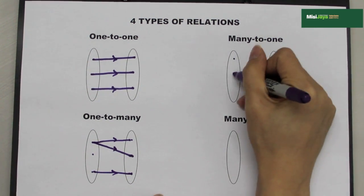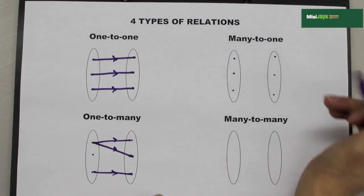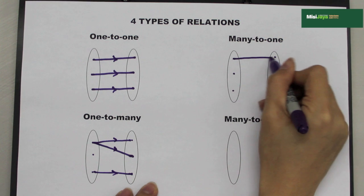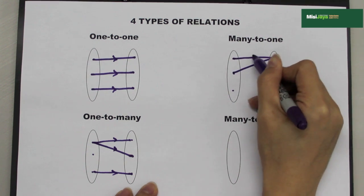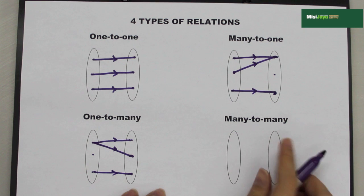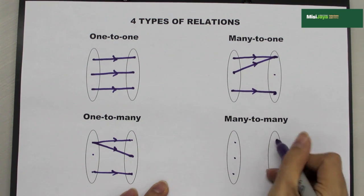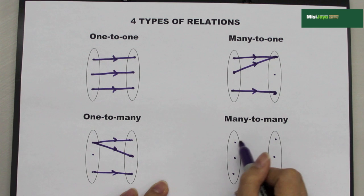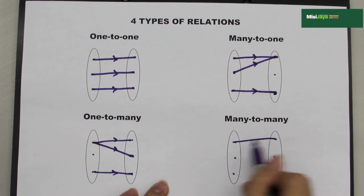Many to 1, which means that 2 objects have the same image. Many to many, which means that 1 object has 2 images.